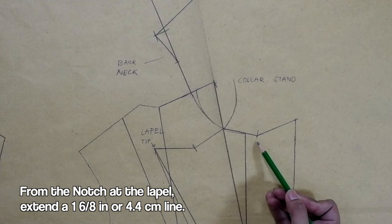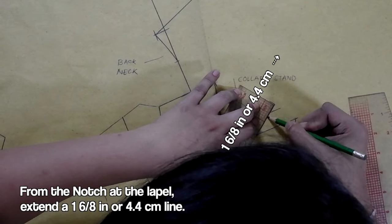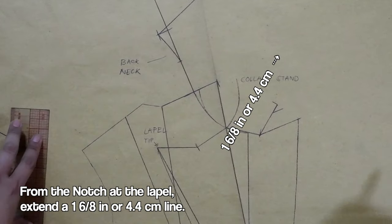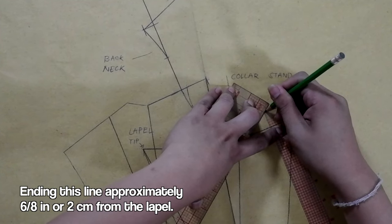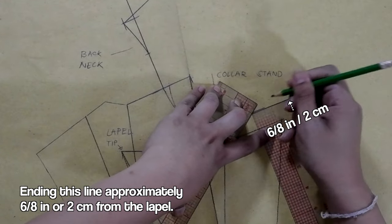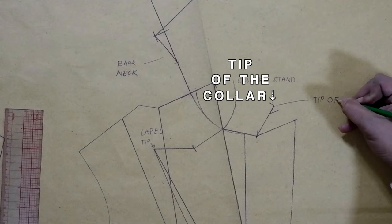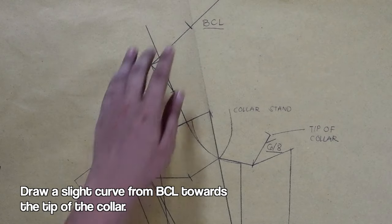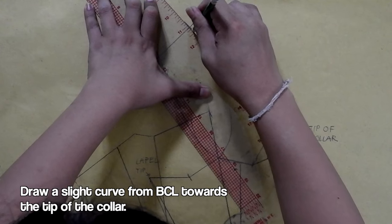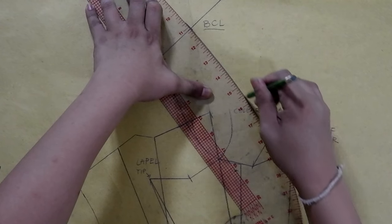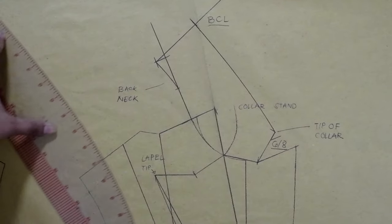Next, from the notch at the lapel, yes, this one, we're going to go back here again. Draw a 1 6/8 inches or 4.4 centimeters line. Ending this line approximately 6/8 of an inch or 2 centimeters from the lapel. This is the tip of the collar. Next, draw a slight curve from BCL going towards the tip of the collar. Completing our collar.